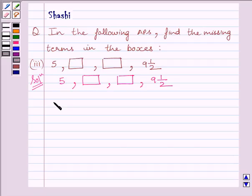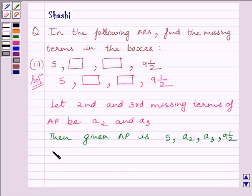Let us assume a₂ and a₃ are the missing terms of the AP. Then the given AP is: 5, a₂, a₃, 9½.